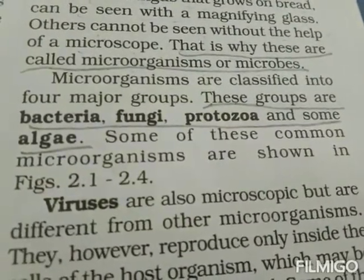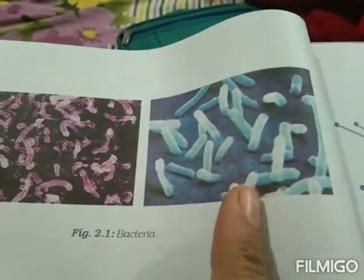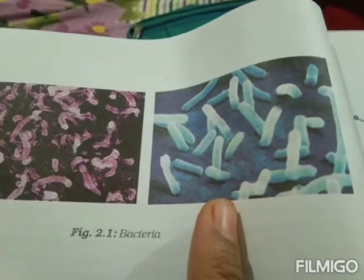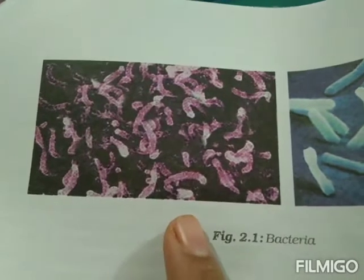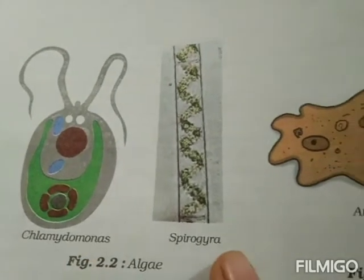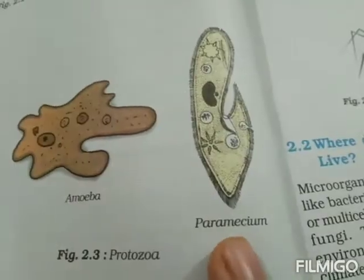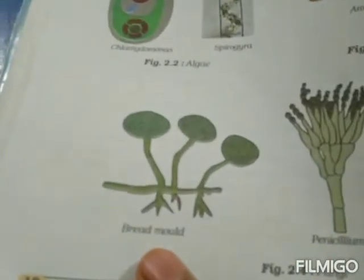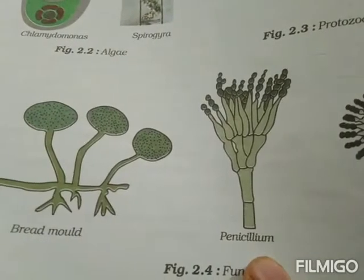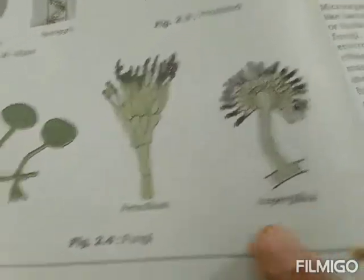Some common microorganisms are shown in figures 2.1 to 2.4. In figure 2.1 you can see rod-shaped bacteria, also called bacilli. Figure 2.2 shows algae: chlamydomonas and spirogyra. Figure 2.3 shows amoeba and paramecium, which are protozoans. Then there is bread mould — a fungus called penicillium — and aspergillus. These are all fungi.